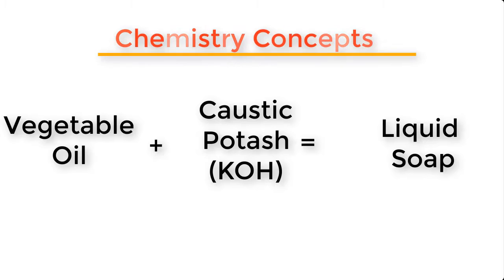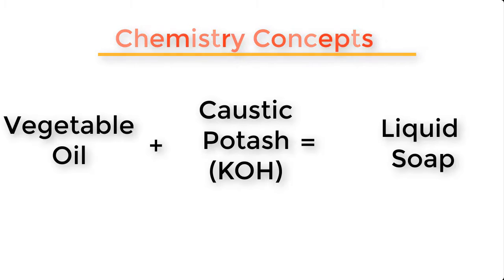Caustic potash and caustic soda are members of the same family of compounds called bases. The lesson we've learned is that we can produce liquid soap by combining vegetable oil with caustic potash, and we can produce solid soap by combining vegetable oil with caustic soda.